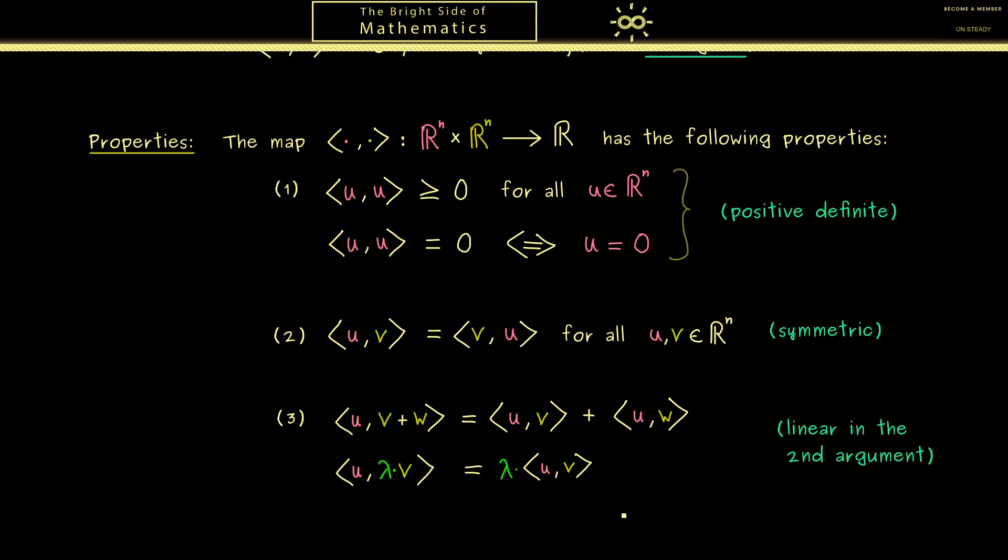Okay now of course these two equalities should hold for all vectors u, v and w in R^n and all scalars lambda in R. Okay now one important thing you should remember is that we have formulated this property here in the second argument. However this pulling out of the addition and the scalar multiplication also holds in the first argument.